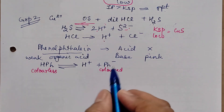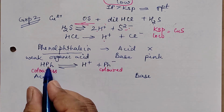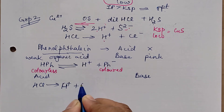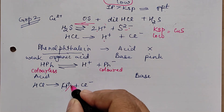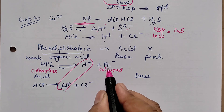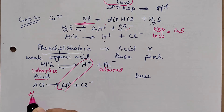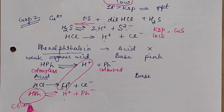When phenolphthalein is added to an acid like HCl, HCl ionizes completely into H⁺ and Cl⁻. Between HCl and HPH there is a common ion — H⁺. Because of this common ion, the ionization of phenolphthalein is suppressed, meaning it remains in the HPH form. Since HPH is colorless, phenolphthalein remains colorless in acid.